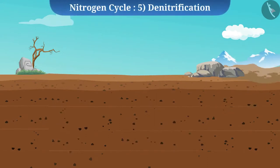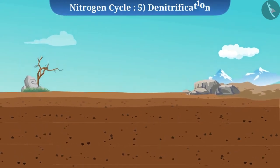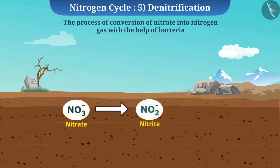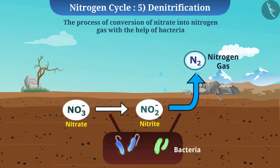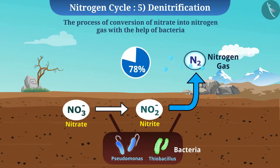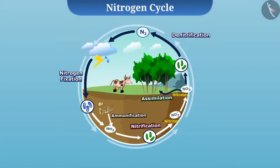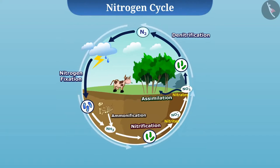Now we are at the final stage of the cycle — denitrification. The process in which nitrogen makes its way back into the atmosphere by conversion of nitrate into nitrogen gas, with the help of bacteria such as Pseudomonas and Thiobacillus, is called denitrification. This completes the nitrogen cycle. In this way, the percentage composition of nitrogen in the atmosphere is maintained. Friends, the nitrogen cycle is very important for us. However, due to many human activities, it does not remain balanced and it affects the ecosystem.